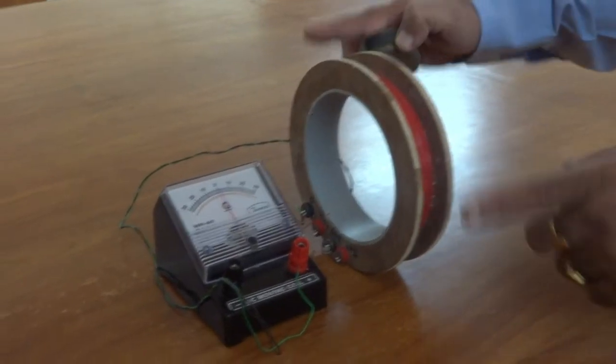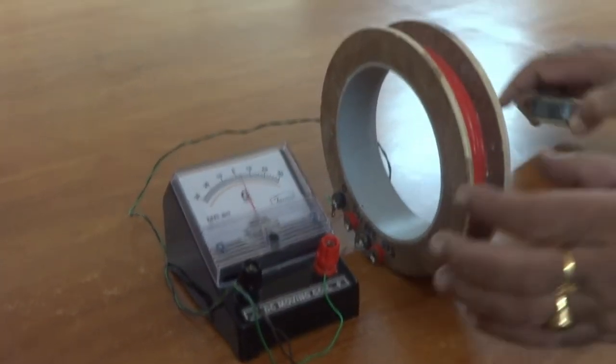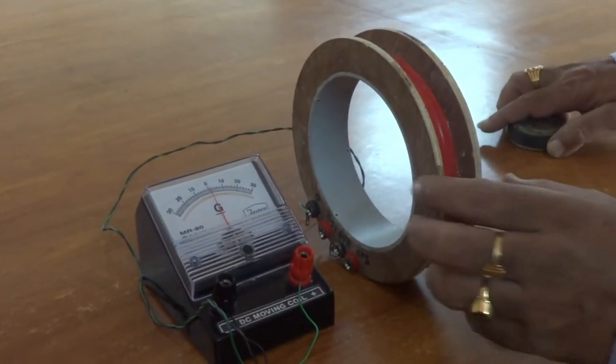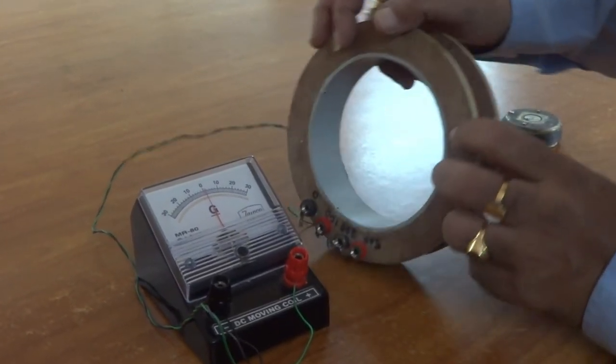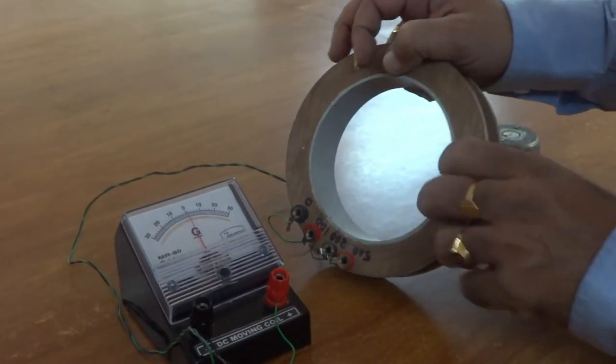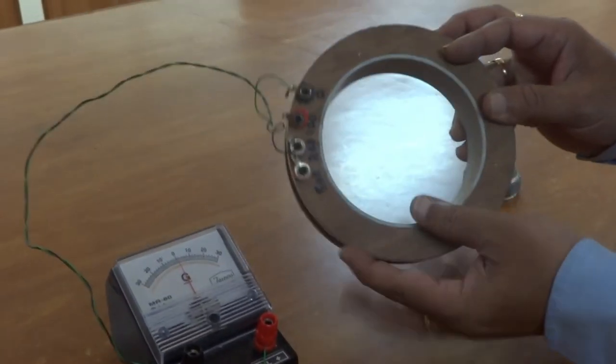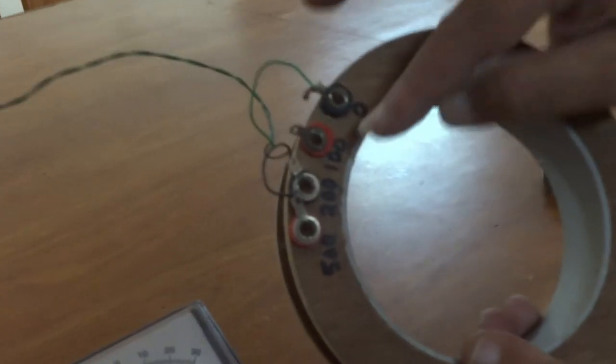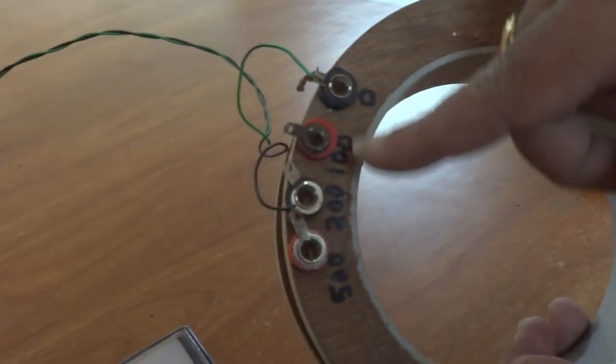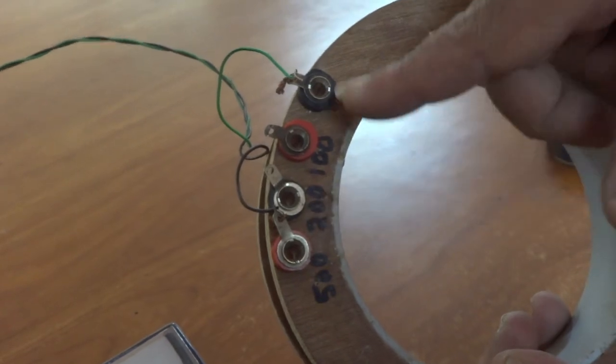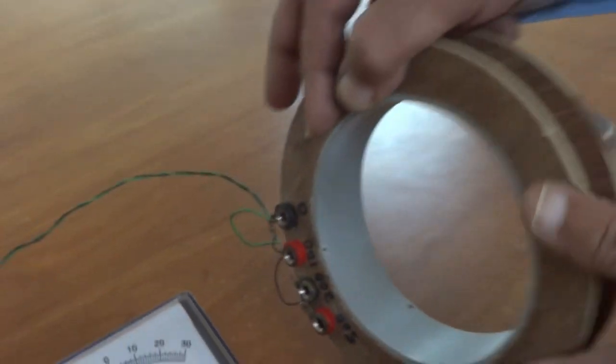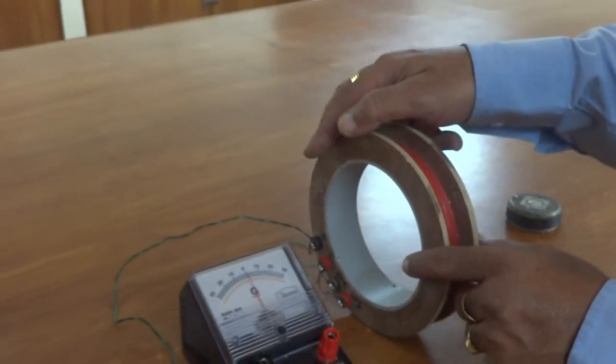The apparatus required for this activity is a coil with more number of turns. In this coil, 0, 100, and up to 500 turns are marked. If somebody connects the wires between 0 and 100, 100 turns will be in the circuit.